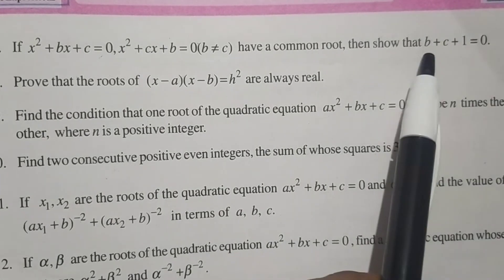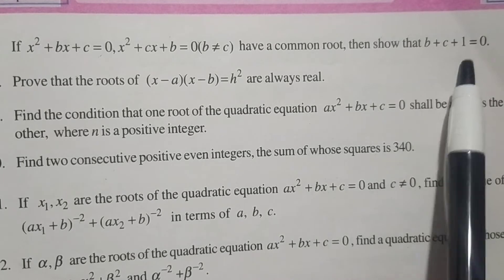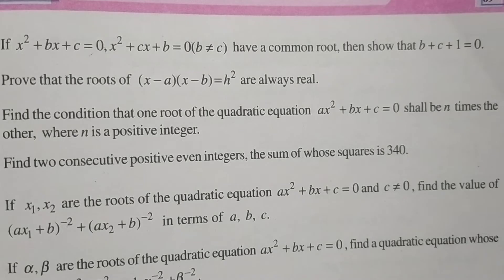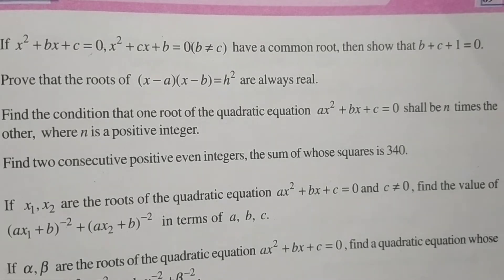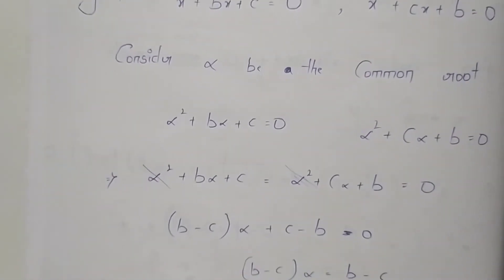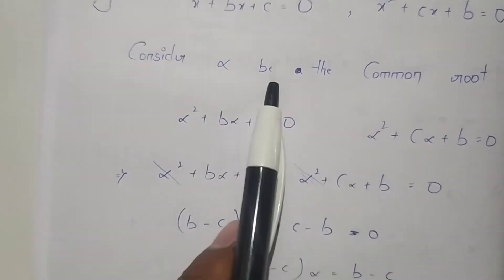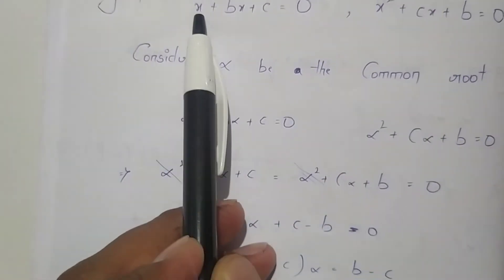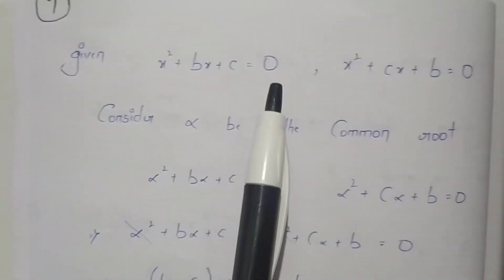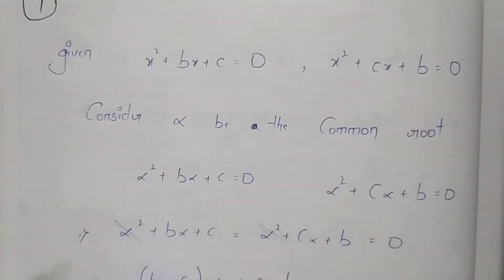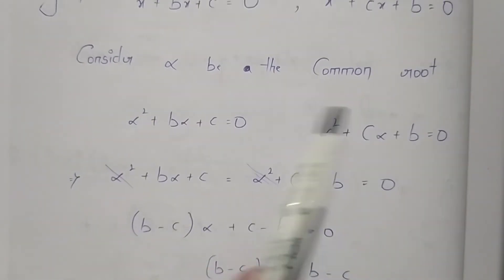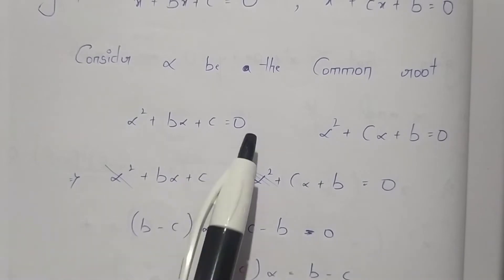So we need to show that b plus c plus 1 equals 0. In this question, we first consider alpha to be the common root of the two equations: x squared plus bx plus c equals 0, and x squared plus cx plus b equals 0. We consider alpha as the common root of these two equations.